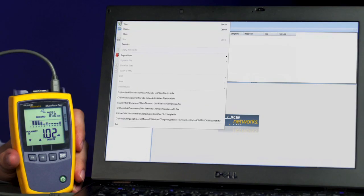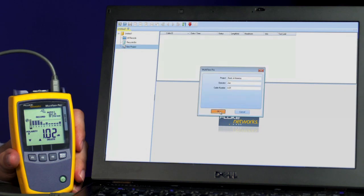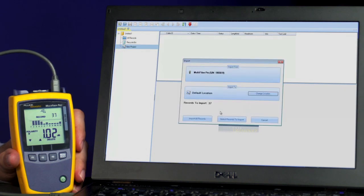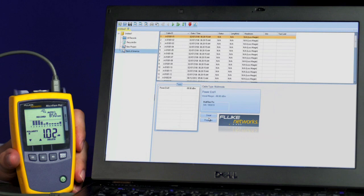Connect the meter to your laptop with LinkWare 7 running. In LinkWare, use the import function to extract all of the test results from the Multi-Fiber Pro meter. Now you could create a professional test report in the format of your choice, whether it's in PDF or text file.